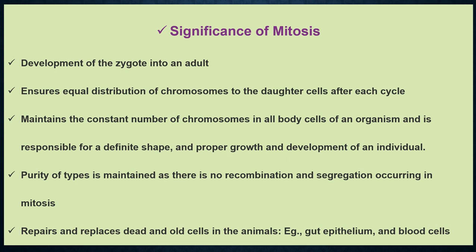Thus purity of types is maintained, and finally mitosis repairs and replaces dead and old cells in animals — for example, the gut epithelium and blood cells. So this is all about the study of mitosis. In our next lecture, we will be talking about meiosis and its significance. I hope you have liked this video. Try to make your own comprehensive notes from it, and feel free to get back to me in case of any doubts and confusion.